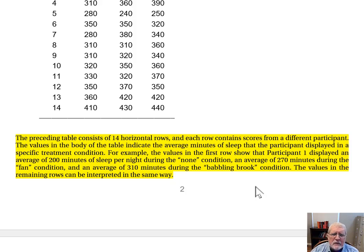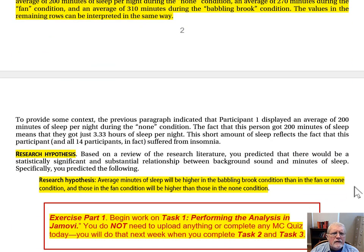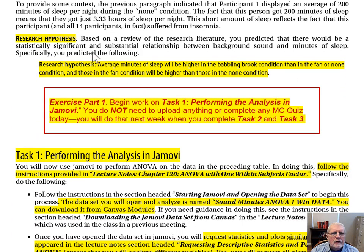For example, values in the first row show that participant 1 displayed an average of 200 minutes of sleep during the none condition, 270 during the fan condition, and 310 during the babbling brook condition. Values in the remaining rows can be interpreted in the same way. Our research hypothesis is as follows: average minutes of sleep will be higher in the babbling brook condition than in the fan or none condition, and those in the fan condition will be higher than those in the none condition.